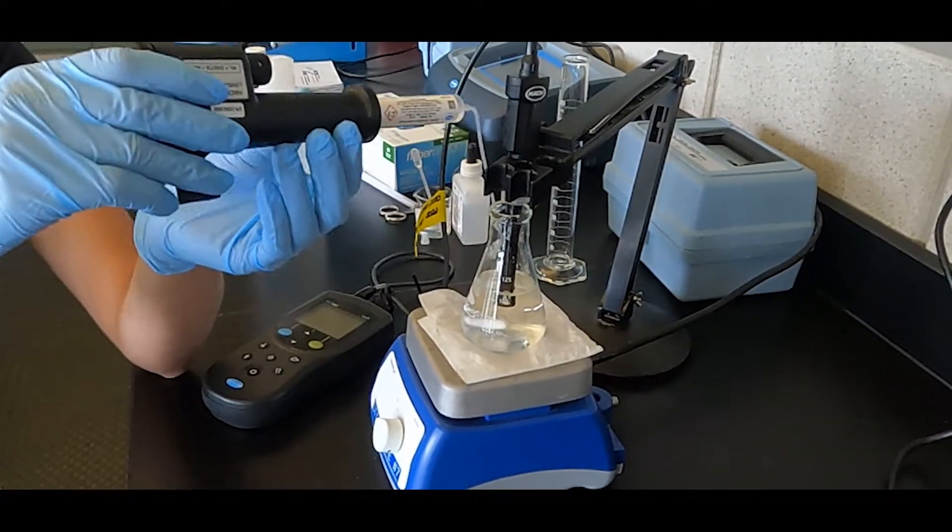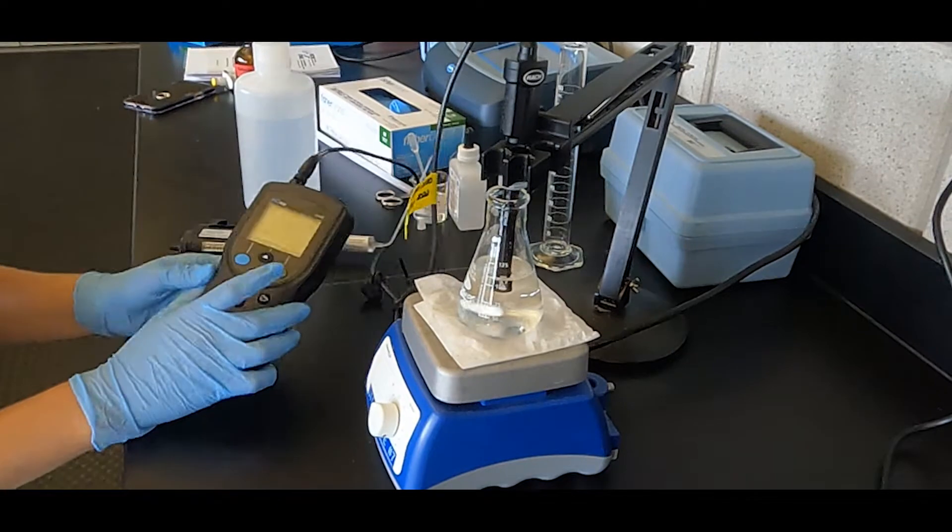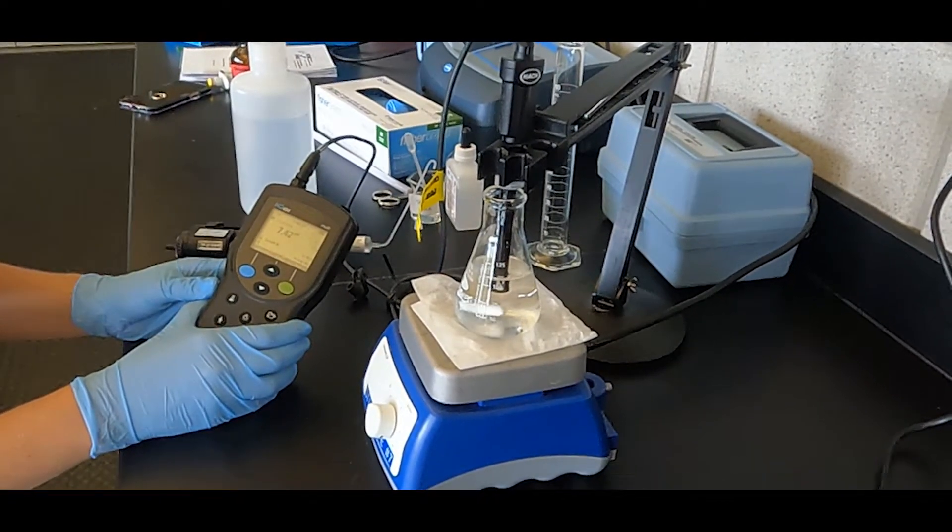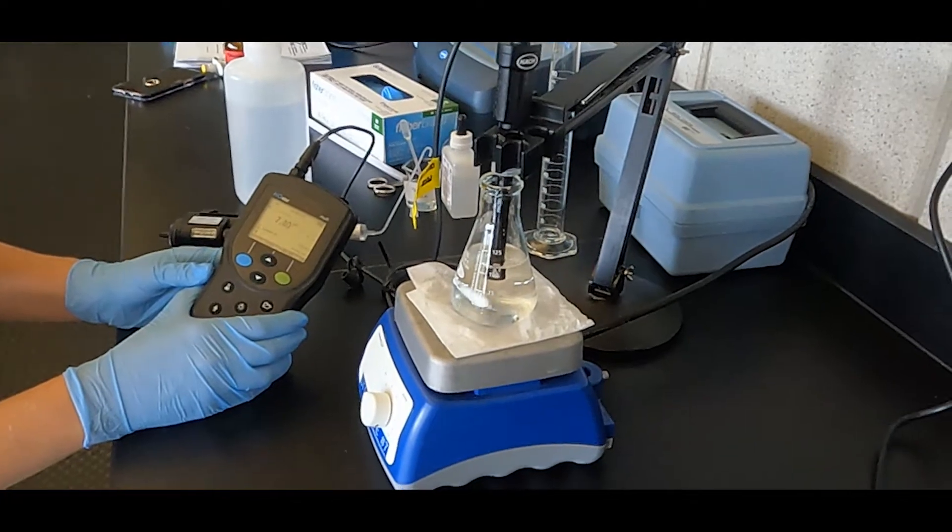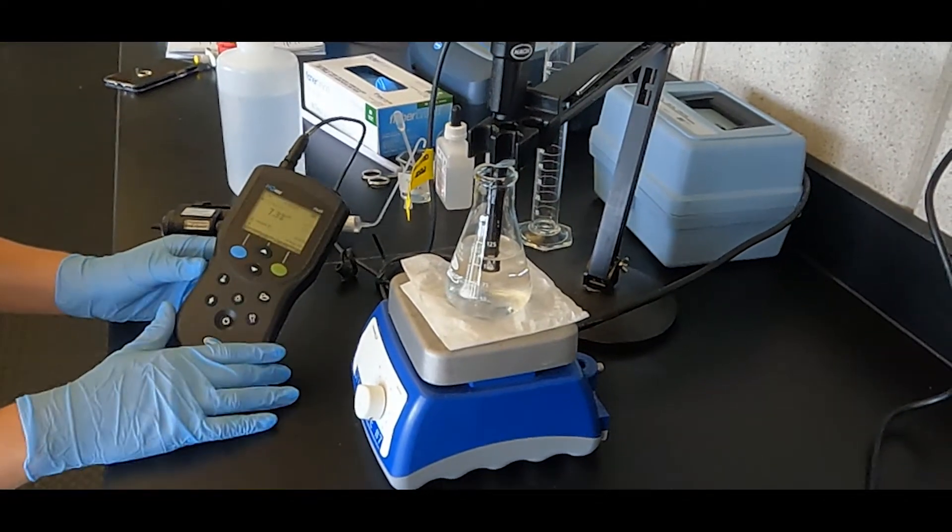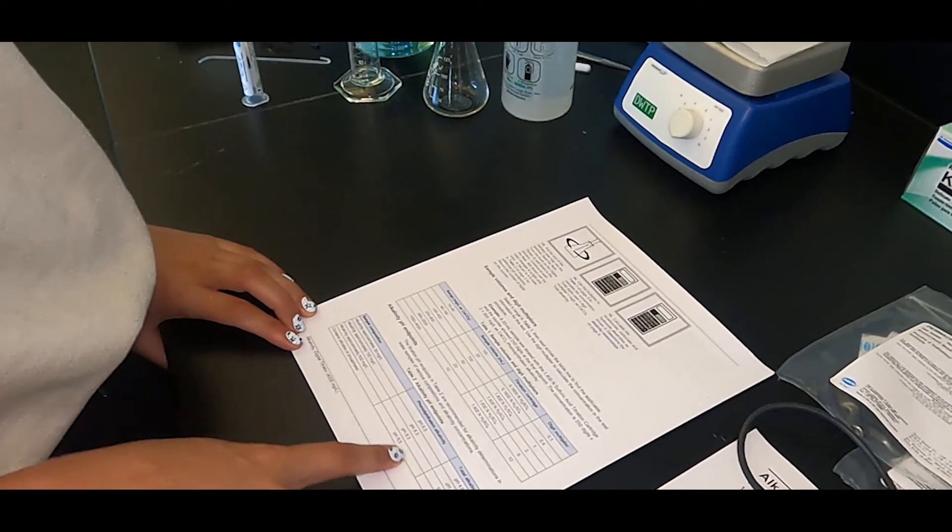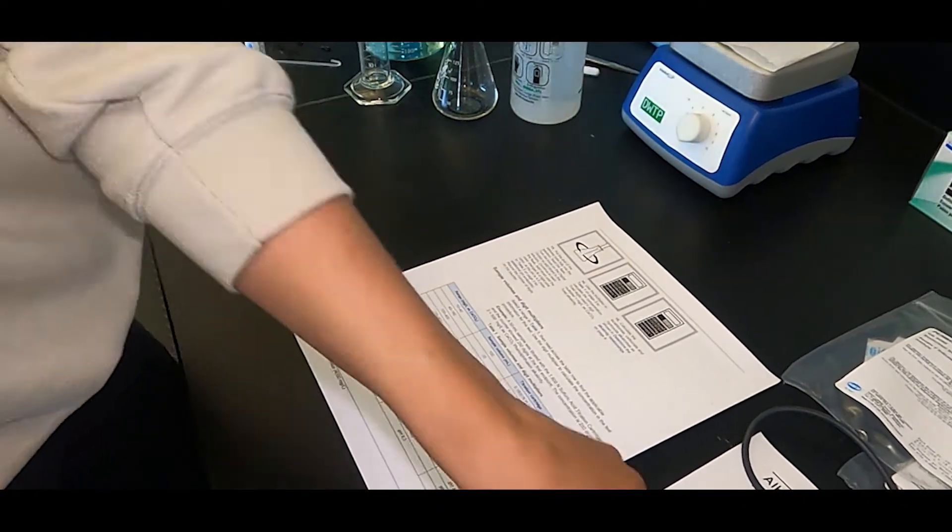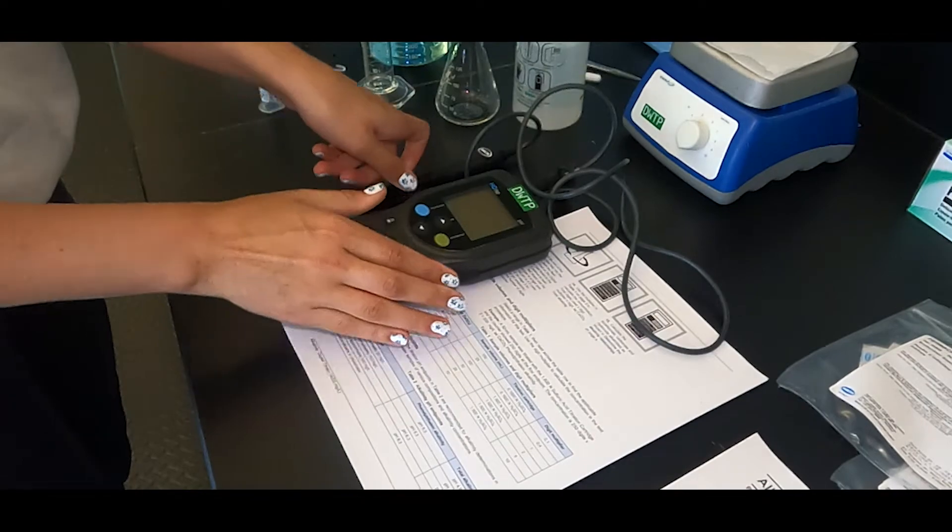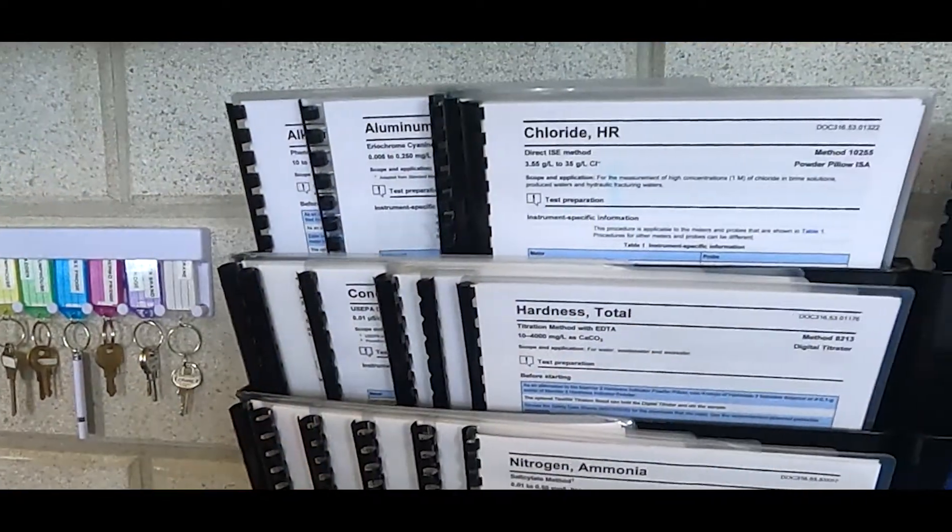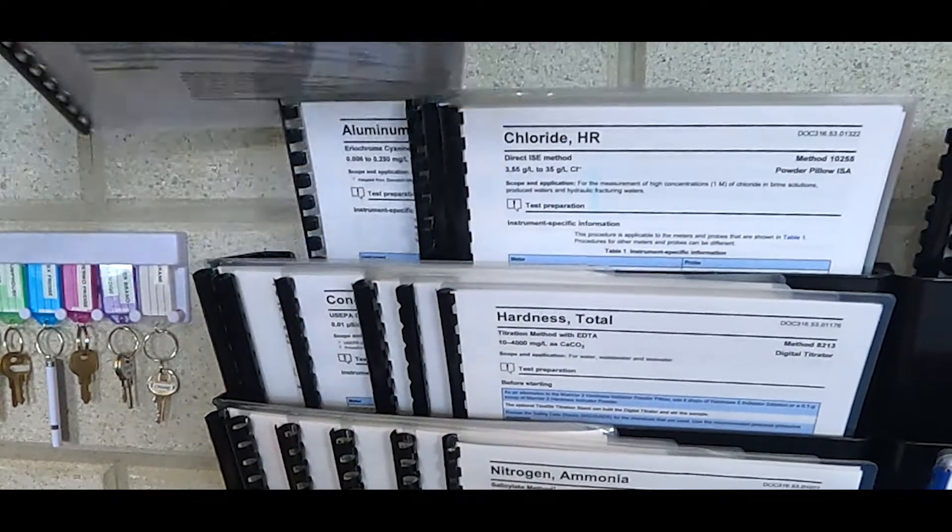Color indicators can be omitted if a pH meter is used to determine the endpoints. This may be helpful if your sample is colored or turbid or if the operator has color blindness. A table is provided in the method to specify pH endpoints for phenolphthalein and total alkalinity based on the type of sample that is being analyzed. Refer to your method for more details.